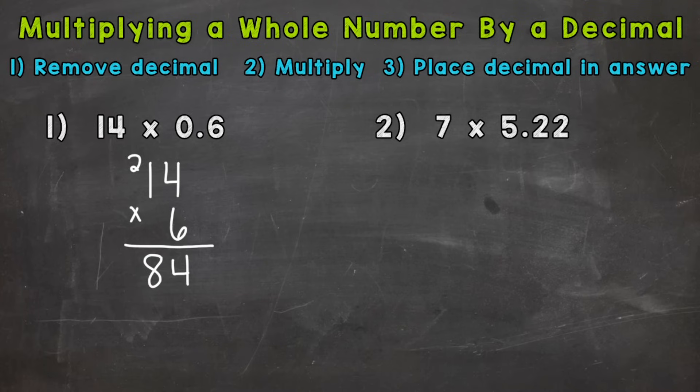Step three, we need to place the decimal in our answer. And we do that by looking at the original problem and seeing how many digits are to the right or behind a decimal, however you like thinking about it. And we have one, this 6 here. And I like circling any digits to the right of a decimal or behind.